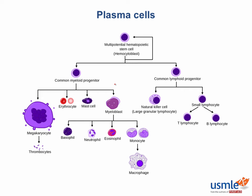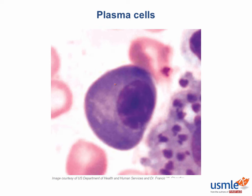Plasma cells are descendants of activated B cells and function predominantly as antibody factories. Knowing that these cells are antibody factories, what would we expect to see in their cytoplasm? Lots of rough endoplasmic reticulum, as well as a very well-developed Golgi apparatus.